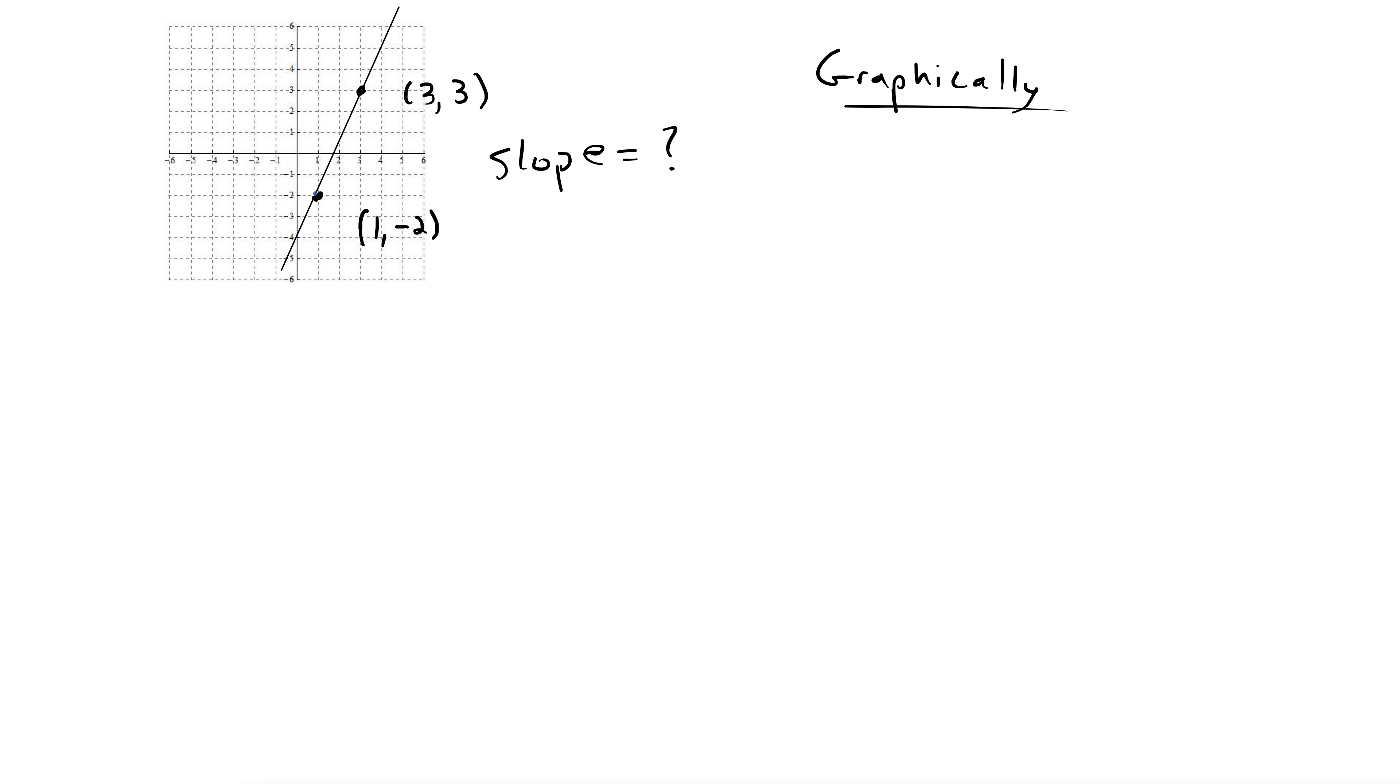To get from this first point to the second point, well first before that let's even observe that it goes up and to the right. And remember up and to the right has a positive slope. So we already know it's going to be positive.